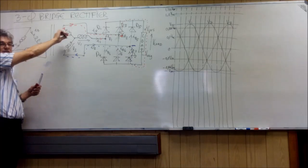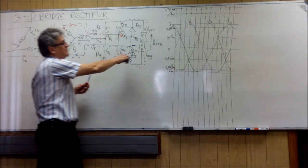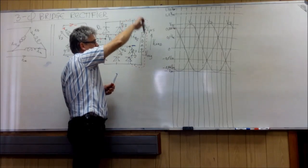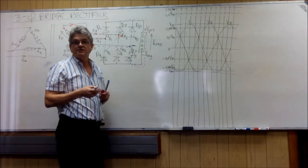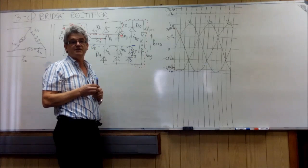So we are going to have AC at the transformer. But on this side here we will have current only going in one direction, which is the output of the load, which is direct current, so it's DC.